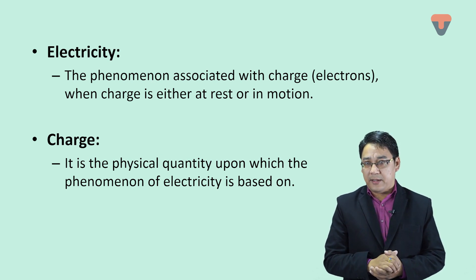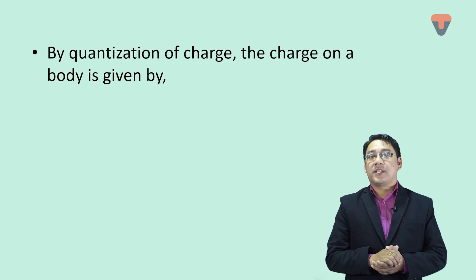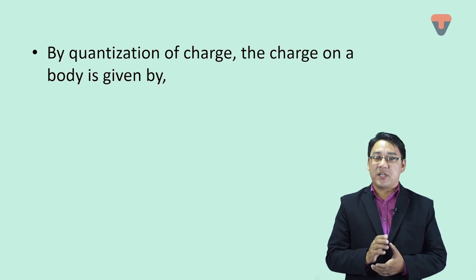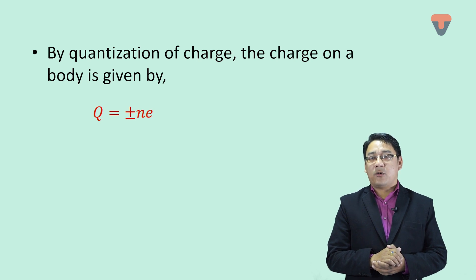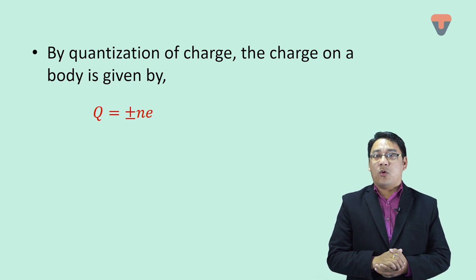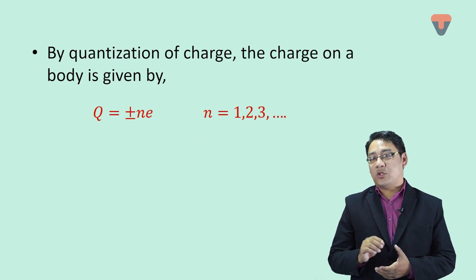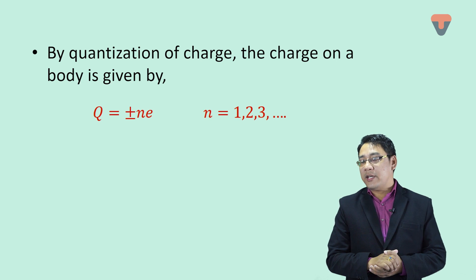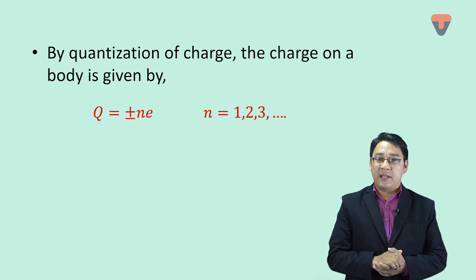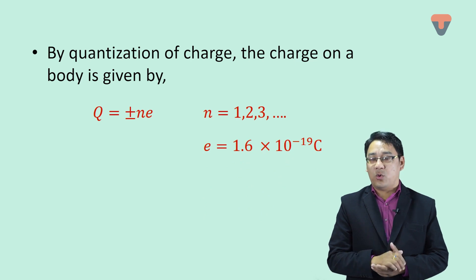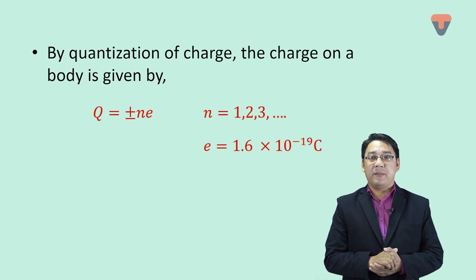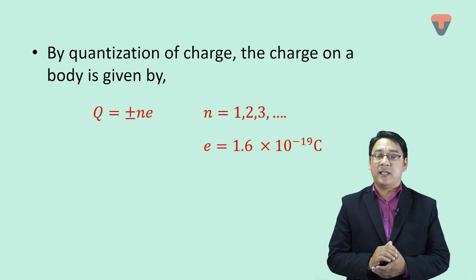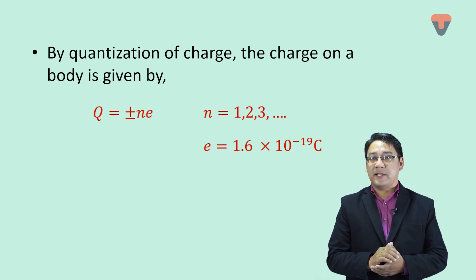The charge on a body should be equal to plus or minus ne, where n is real numbers like one, two, three, and so on. It could be millions or thousands. What is this e? This is the charge of an electron, given by 1.6 into 10 to the power minus 19 coulomb. This formula Q equals plus minus ne we call the law of quantization of charge.